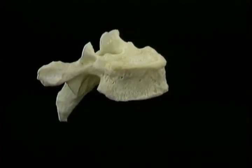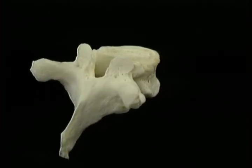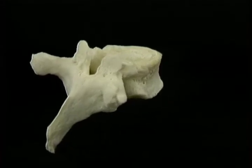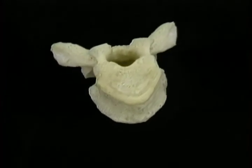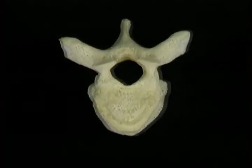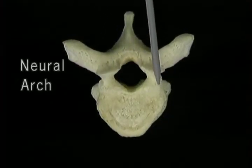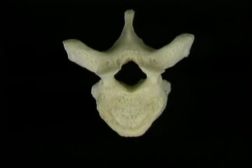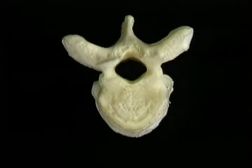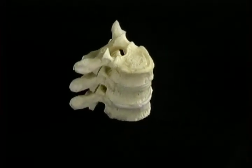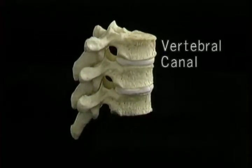Behind, there's a set of bony plates and projections which serve three functions: to protect the spinal cord, to give attachment to muscles and ligaments, and to articulate with the adjoining vertebrae. This arch of bone, the neural arch, encloses the spinal cord. The space surrounded by the arch and the back of the body is called the vertebral foramen. The series of vertebral foramina create the tubular space called the vertebral canal.